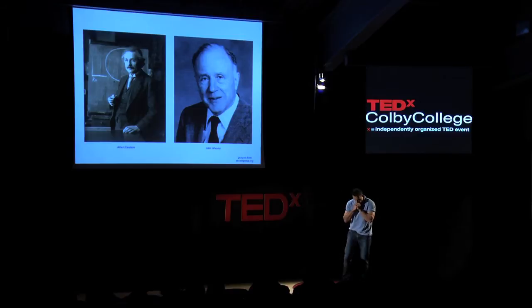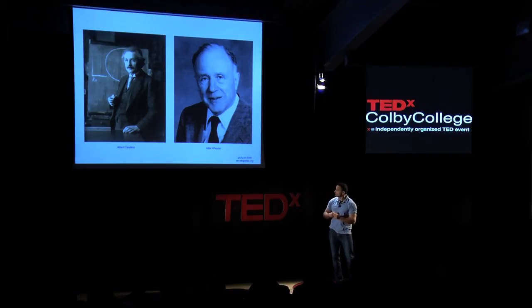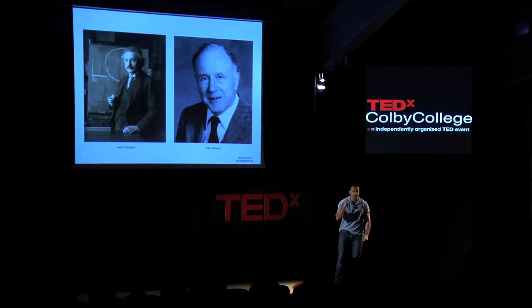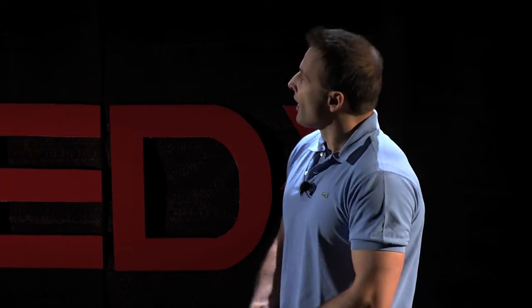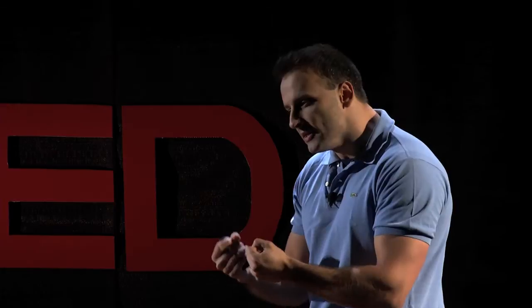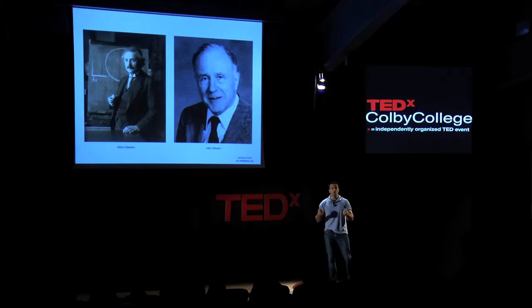Once somebody asked the famous physicist John Wheeler to explain general theory of relativity in one sentence. And what John Wheeler said is: there's nothing around us in the world except curved spacetime. What he meant is that Einstein's general theory of relativity describes gravity — the force that attracts massive objects like the Earth and the sun.